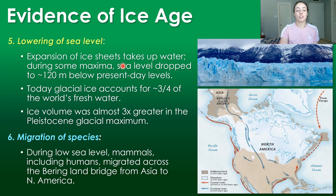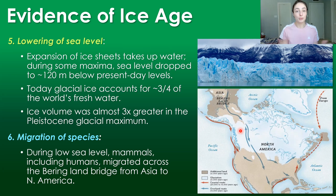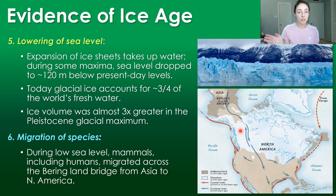the migration of species. During these low sea level intervals at glacial maxima, mammals — including humans — have migrated across the Bering Land Bridge from Asia to North America, which has been very important for the spreading of humans and other species across different continental masses. The lowering of sea level allows continental crust to rise above sea level, allowing things that don't swim to cross those bridges.